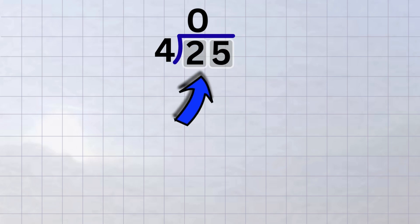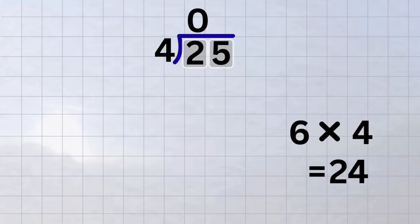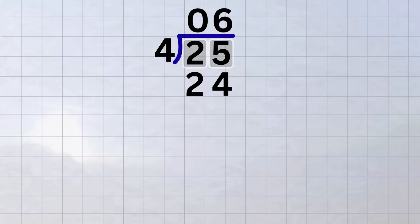Then we look at the next digit and combine it with the one we already have. Now we're looking at twenty-five. How many times does four fit into twenty-five? Let's calculate. Six times four equals twenty-four, which is just under twenty-five. So the answer is six times. We place the six in the quotient above the five. Then we multiply. Six times four equals twenty-four. Now we subtract. Twenty-five minus twenty-four equals one. So, are we done? Yes, but there are a few things I want to point out.